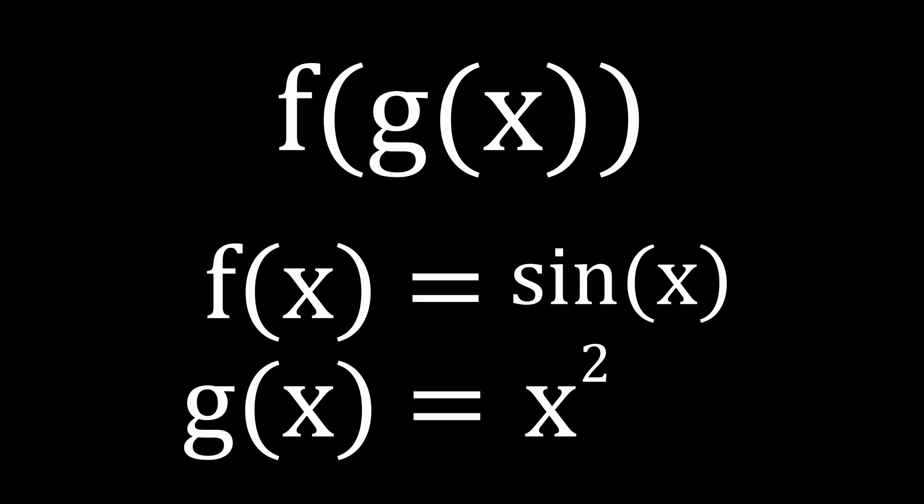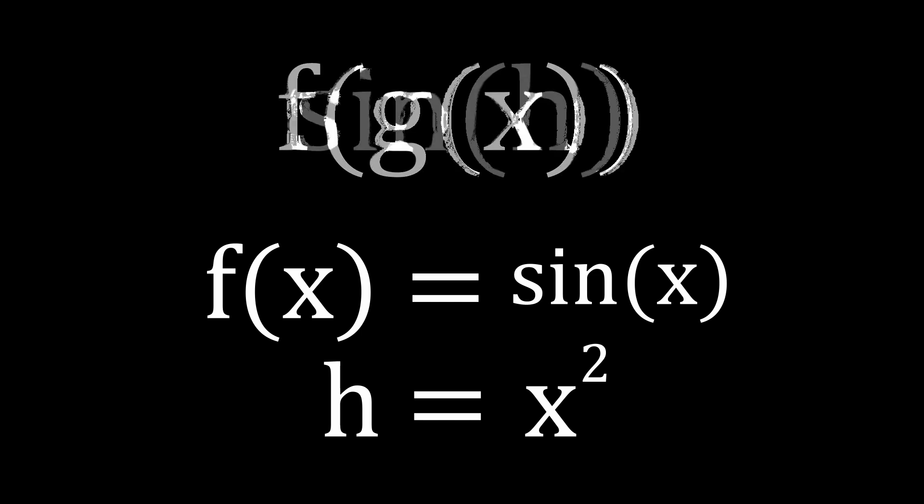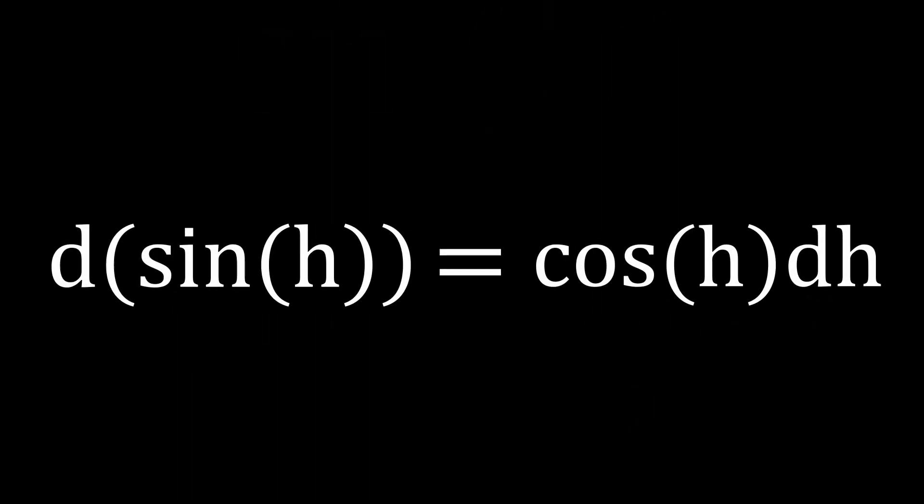Rather than thinking of g(x) as a function of x, let's think about it as its own unique variable, h. In this case, the original function, sine of x squared, becomes the sine of h. If we calculate the difference in the sine of h, we know that it is equal to cos(h) multiplied by the difference in h.